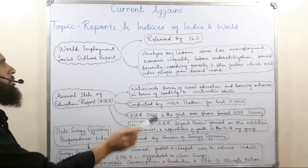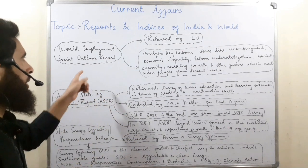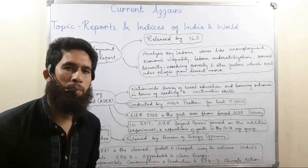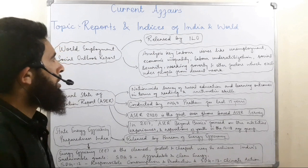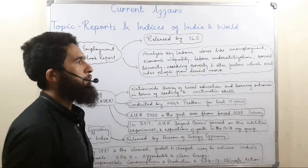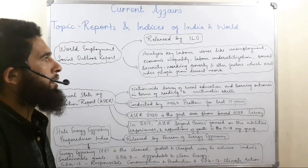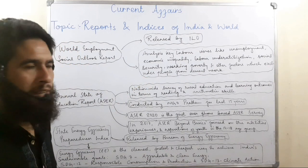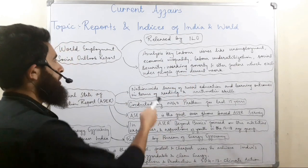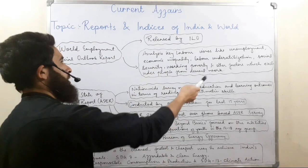Now let's discuss these in detail. First is the World Employment Social Outlook Report, released by the International Labour Organization. Its main focus remains on employment issues: economic inequality, labour underutilisation, social security, and working poverty.